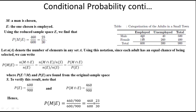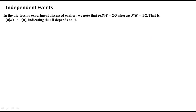Now consider independence. In the die-tossing experiment, P(B|A) = 2/3 whereas P(B) = 1/2, so P(B|A) ≠ P(B), indicating that B depends on A. Here P(B) is the unconditional probability and P(B|A) is the conditional probability. Since the conditional probability is not equal to the unconditional probability, B depends on A, meaning A and B are dependent events.